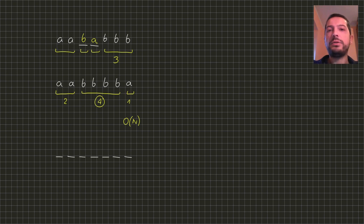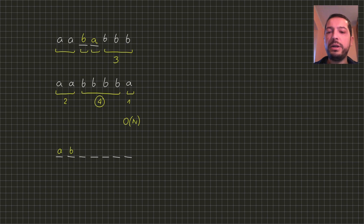The other extremal case is when all the letters in the string are missing and we have full freedom to fill the gaps. So if we put letters A and B alternately, we will get the smallest possible answer because every fragment will have the smallest possible length of 1.